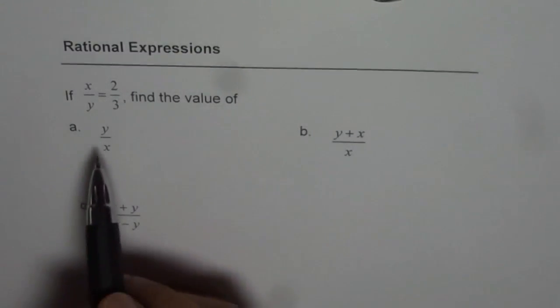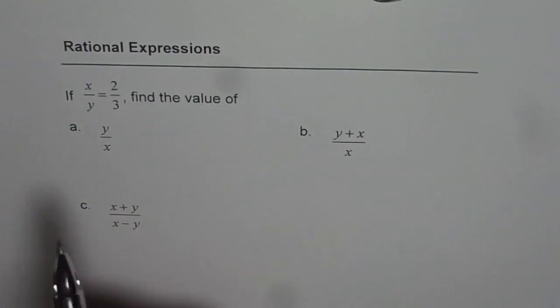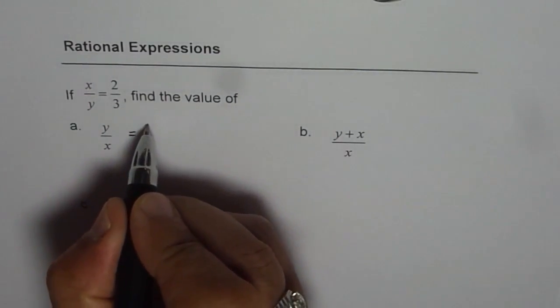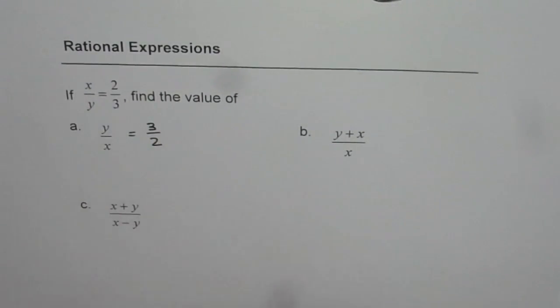Well, that's simple. y over x is the reciprocal of x over y, and therefore it should be equal to 3 over 2. That's simple. That is how we can get it.